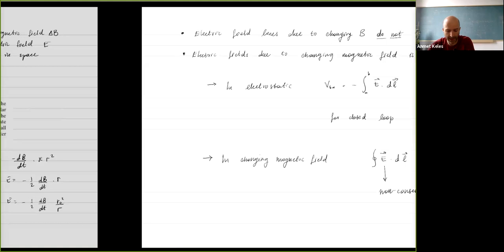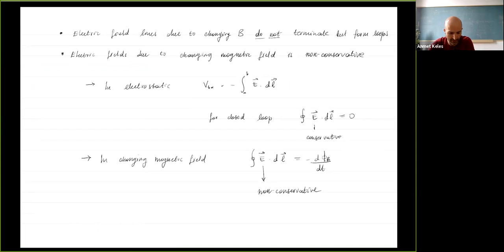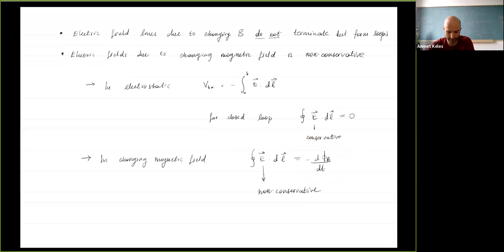We finished with some remarks about this kind of electric field. First, these electric field lines do not terminate at charges — there are no charges here, these are closed loops. Second, the electric field due to a changing magnetic field — the induced electric field — is non-conservative, because the line integral of this field equals the rate of change of flux, which is non-zero, and that by definition makes it a non-conservative field.